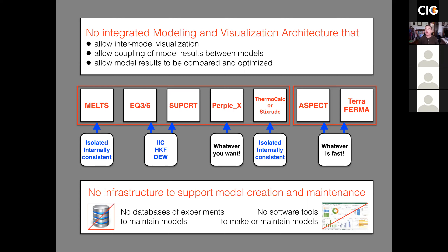You have to somehow make them internally consistent. The situation as it exists right now is that there is no support infrastructure, no modeling framework to allow you to adjust the thermodynamic models or the properties models that go into these various structures. On top of that, there's no comprehensive way of visualizing results of these models. We have a situation that makes the whole modeling procedure very, very difficult, and it makes the ability to combine models from various sources almost impossible.